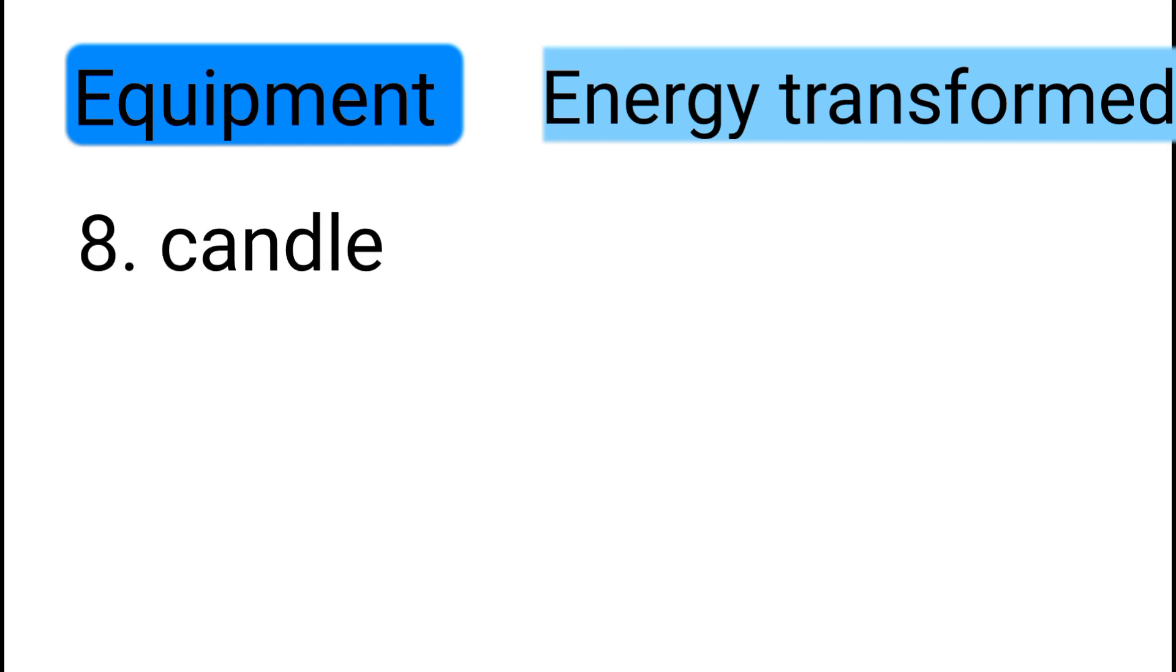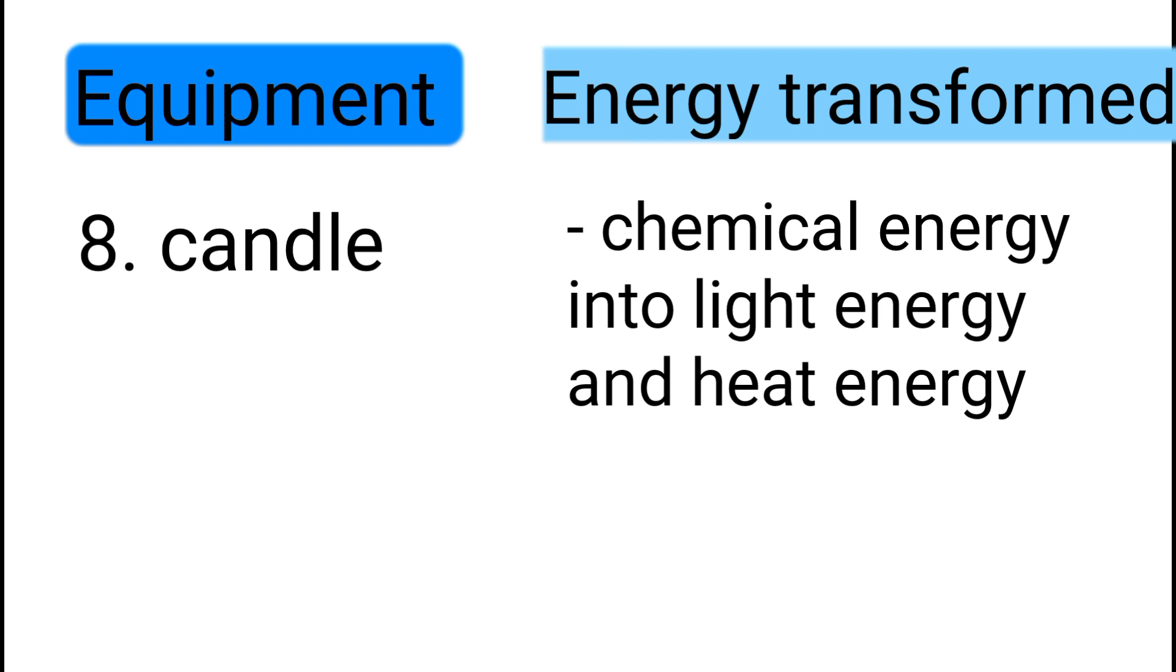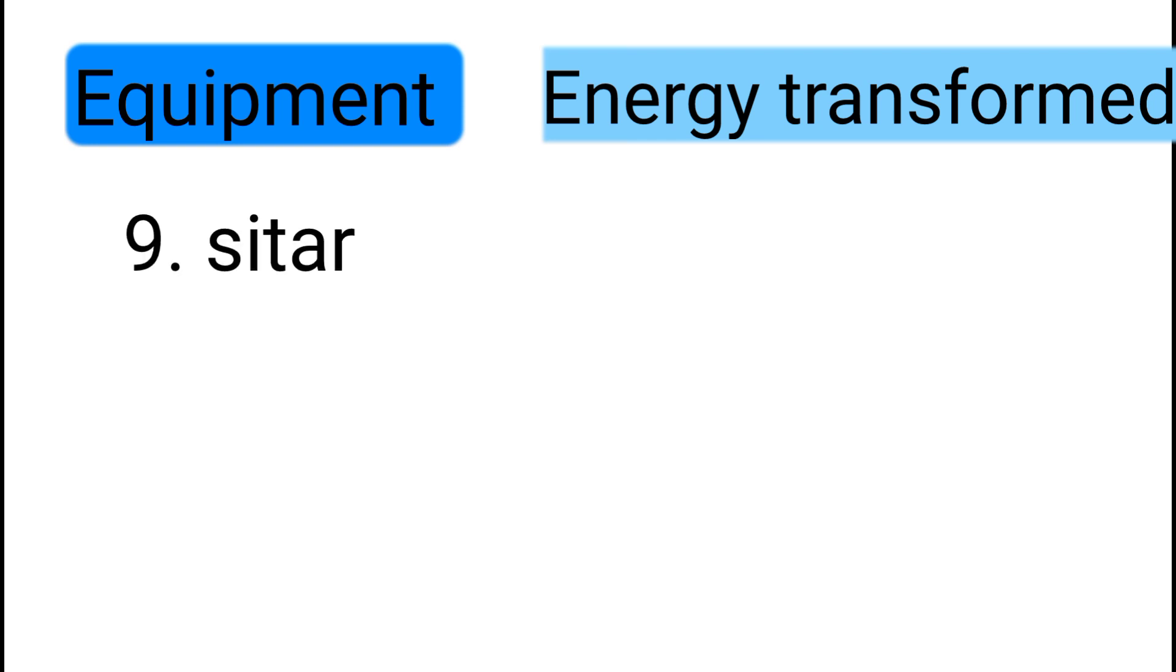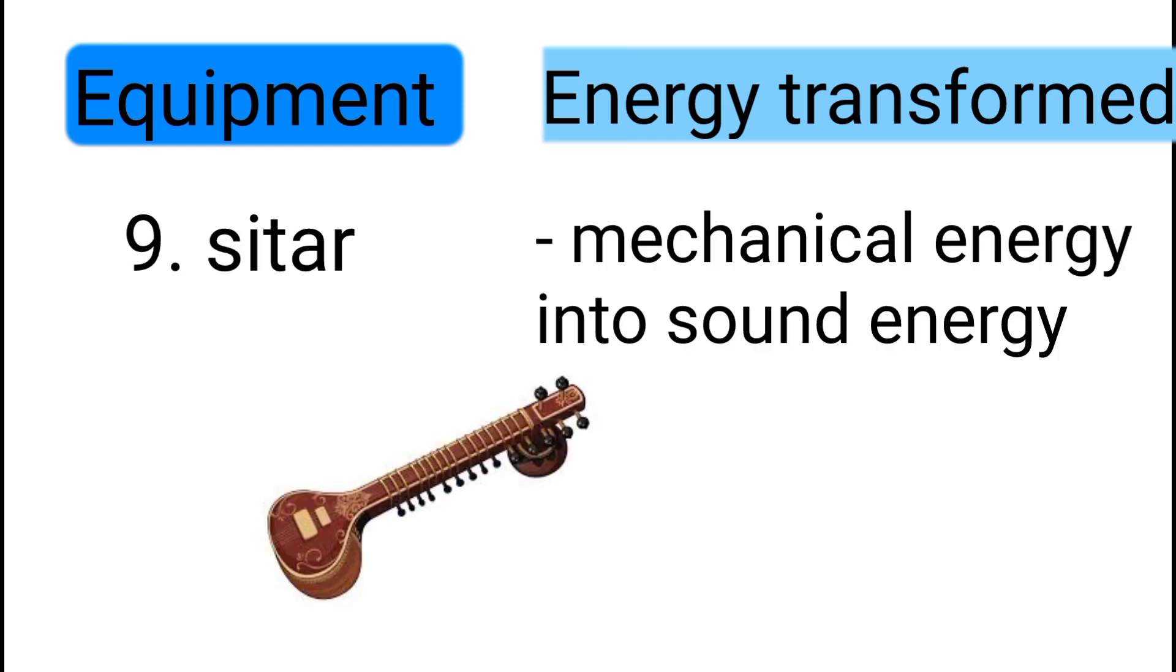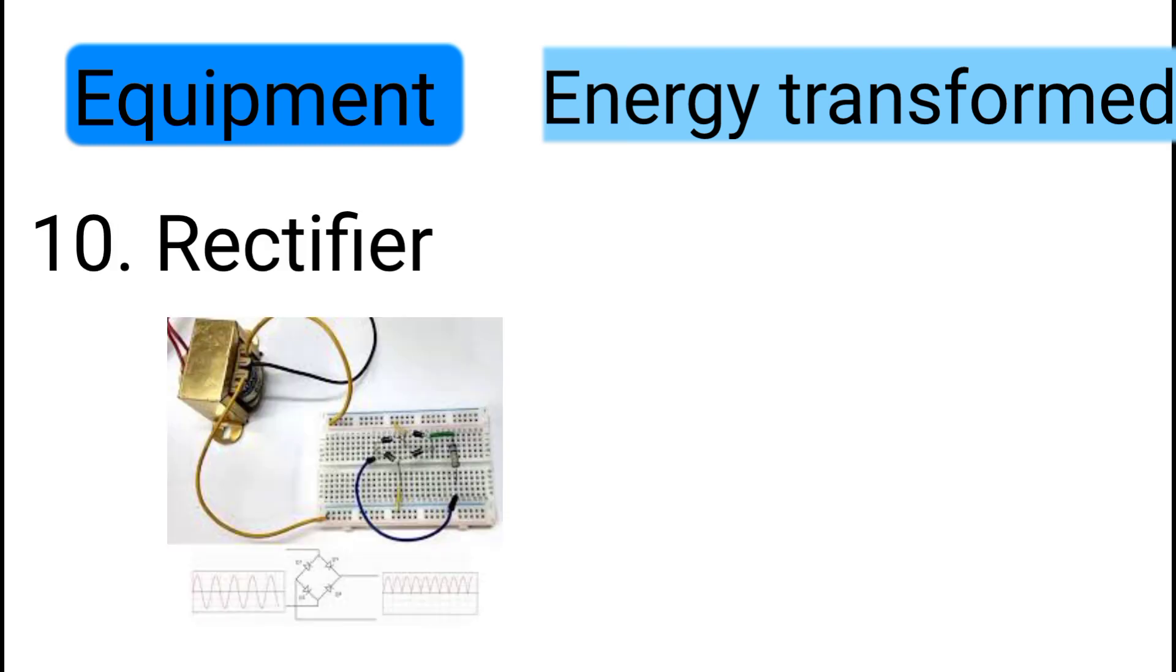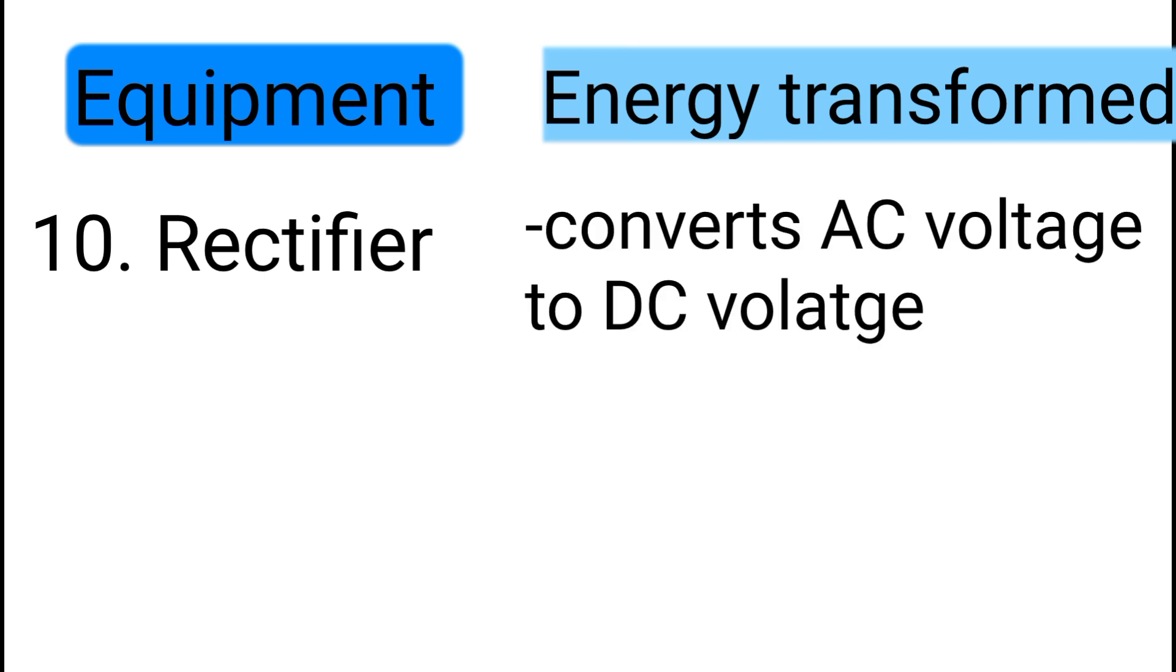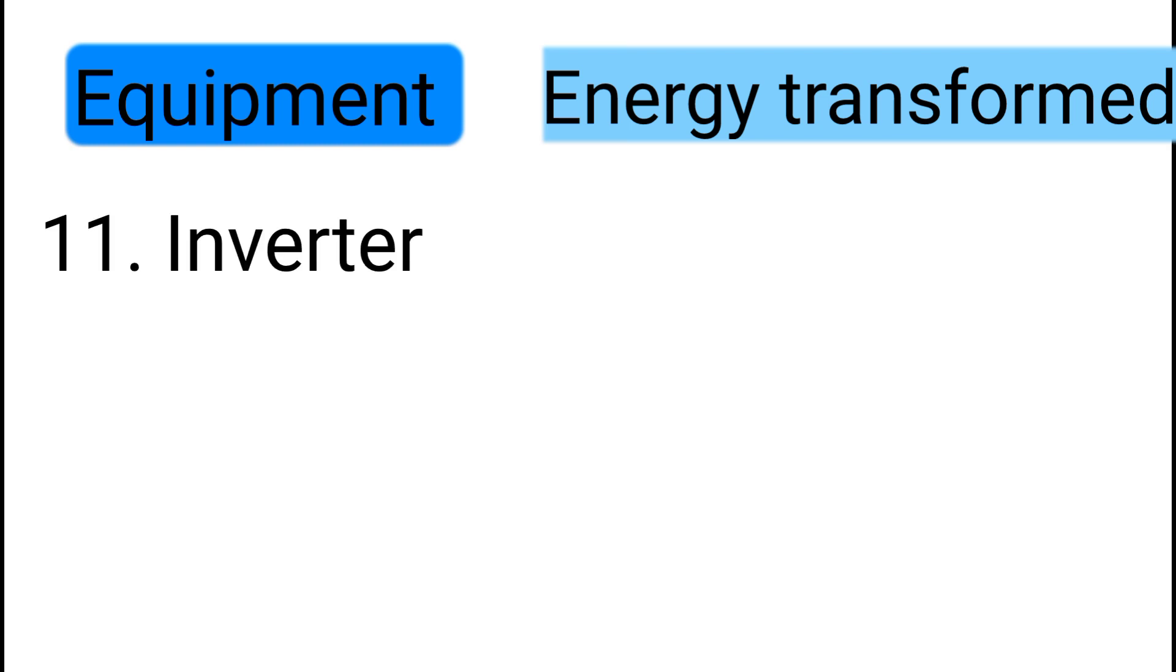Number eight: candle transforms chemical energy into light energy and heat energy. Number nine: setter transforms mechanical energy into sound energy. Number ten: rectifier converts AC voltage into DC voltage.